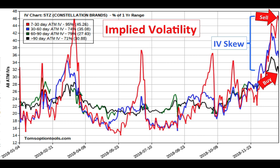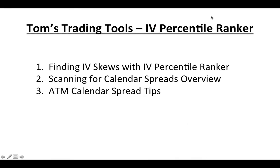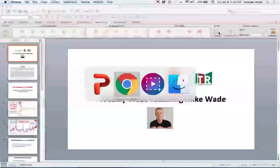The thing we want to look for is how to get smart about what we're buying and selling, and we're going to be able to do that with a brand new ranker called the IV Percentile Ranker. In this video I'll show you how to use the ranker to find the very best IV skews, to look for cheap options in what we're buying and expensive options in what we're selling. I'll take the results and pass them into the calendar spread ranker for a quick overview, and I'll also share some basic at-the-money calendar spread tips.